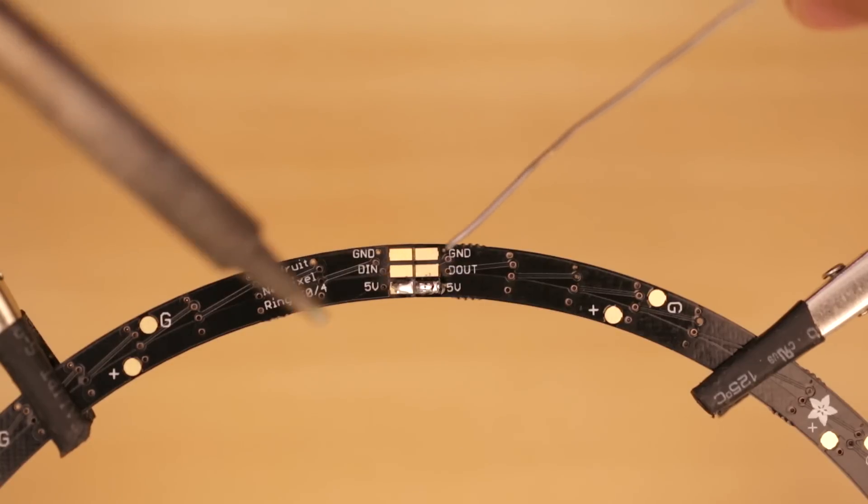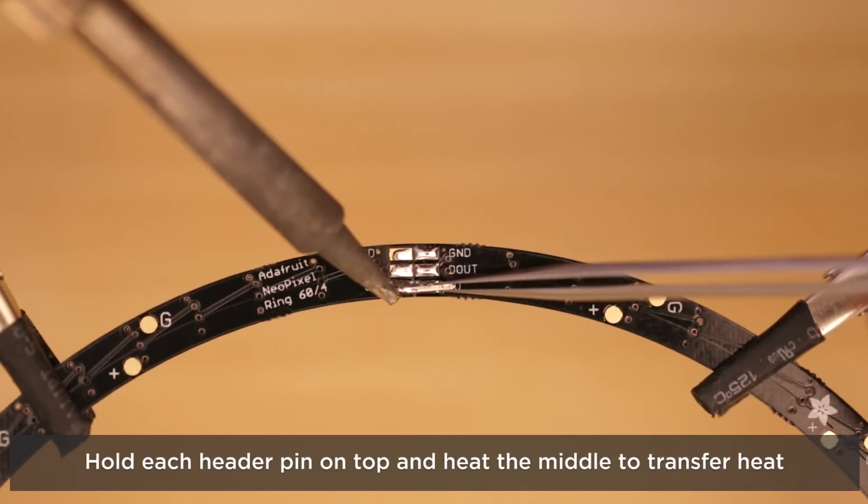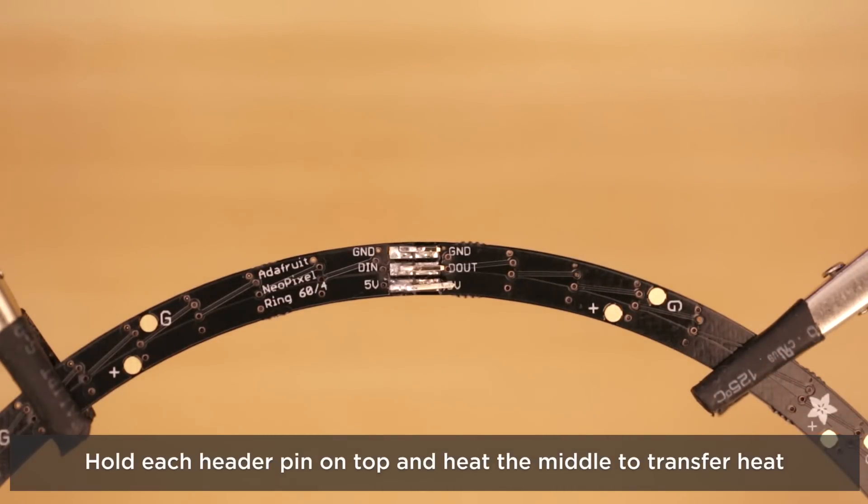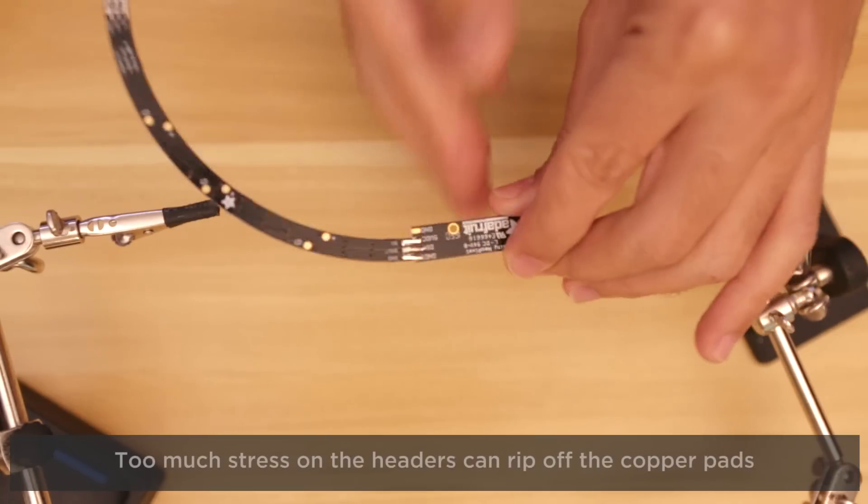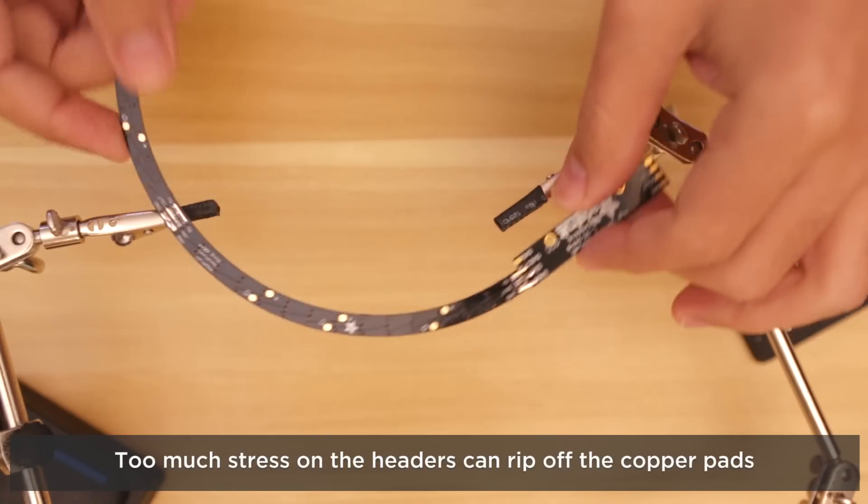Let's see that again. Tin all of the pads with a bit of solder. Then keep the pad heated while placing the headers on top. You'll definitely want to use tweezers so you don't burn your fingers and this helps keep things sturdy. This makes the connections much stronger than just using solder.